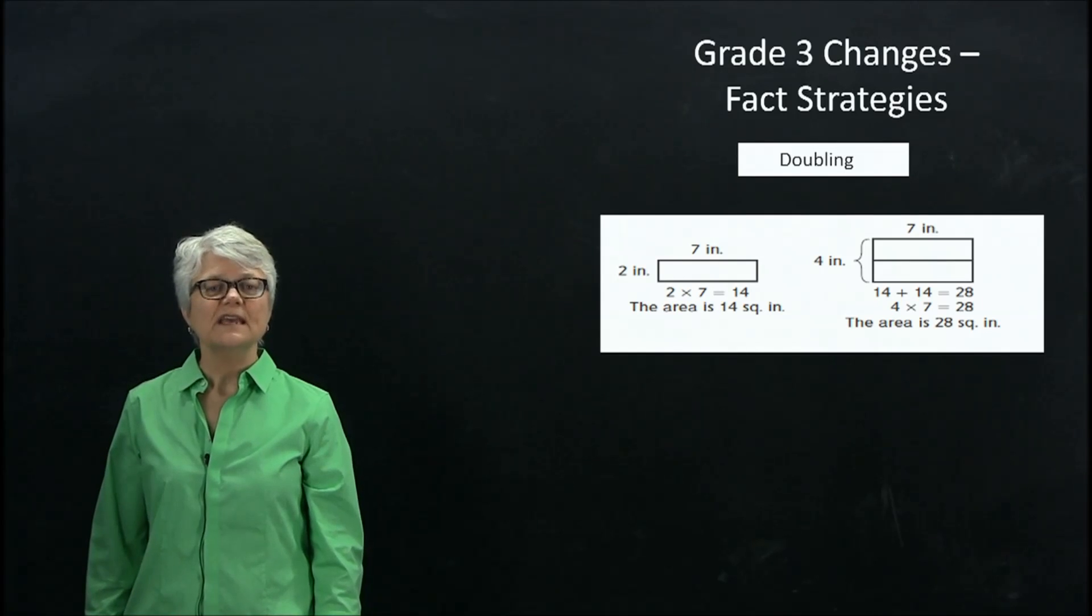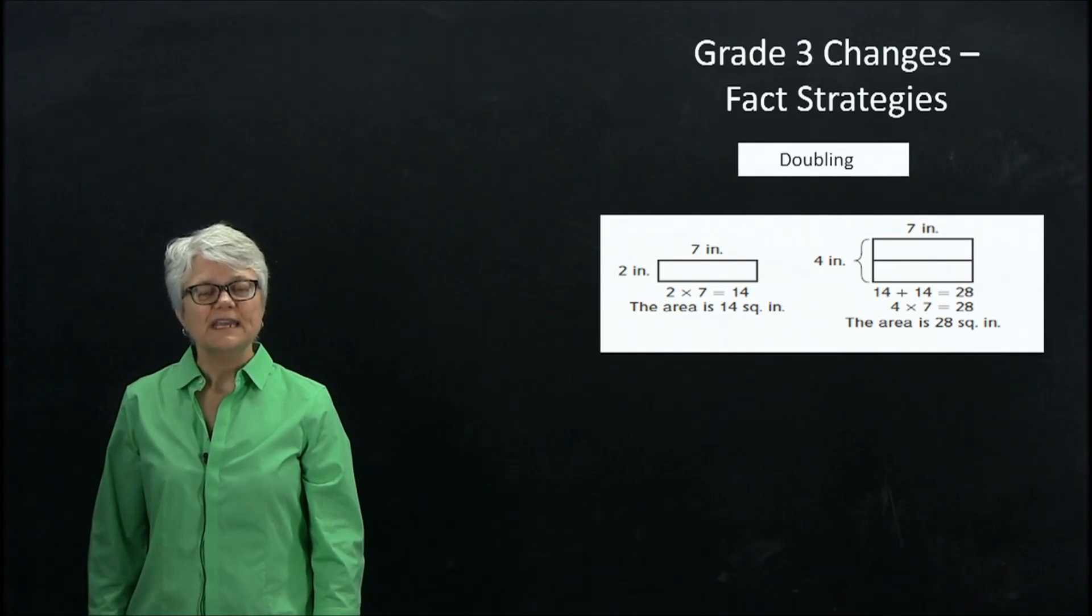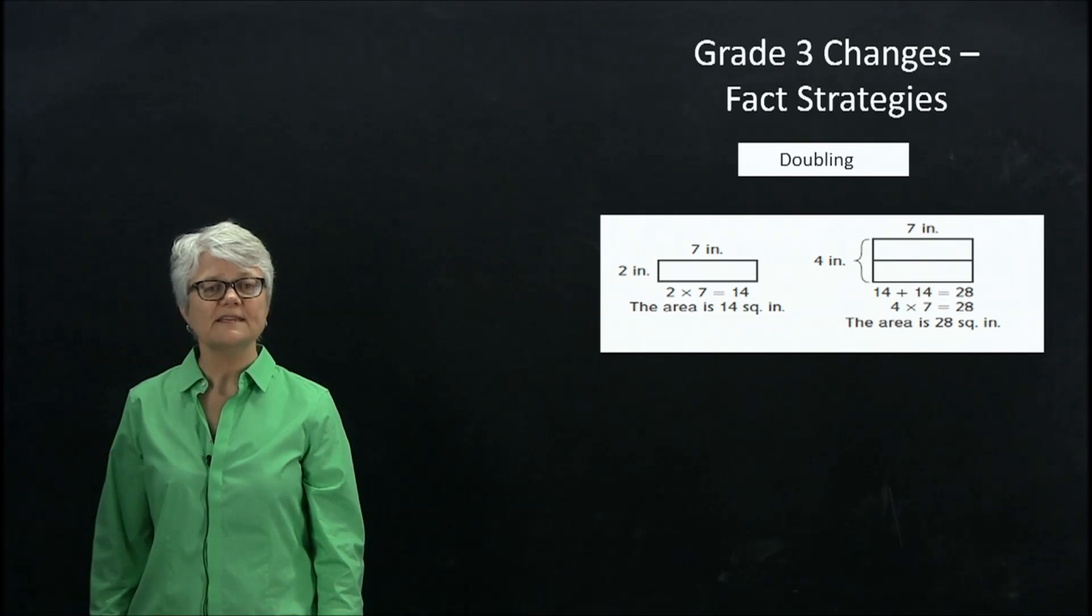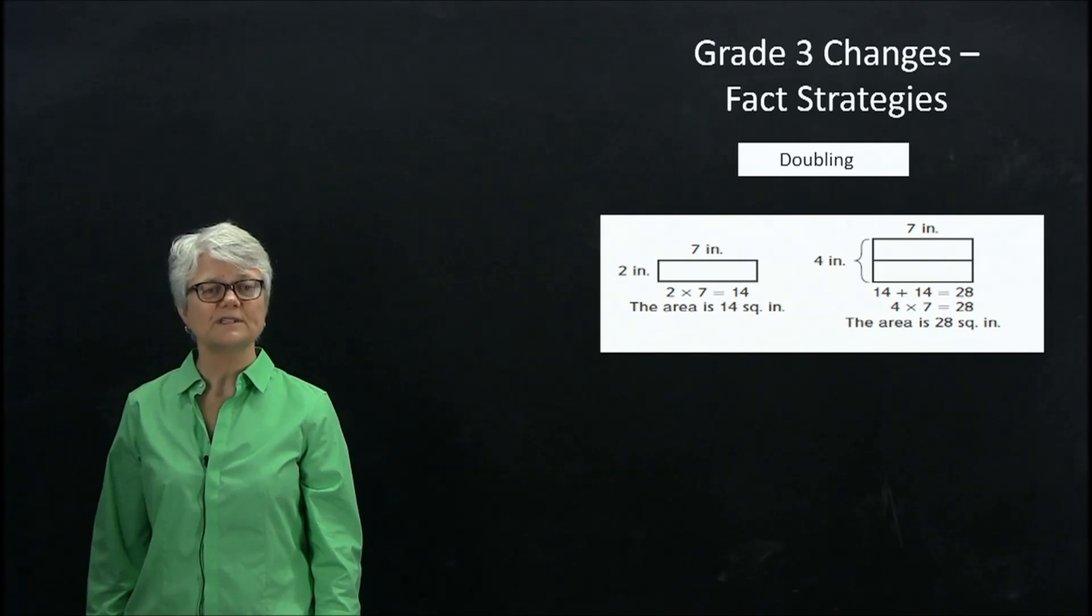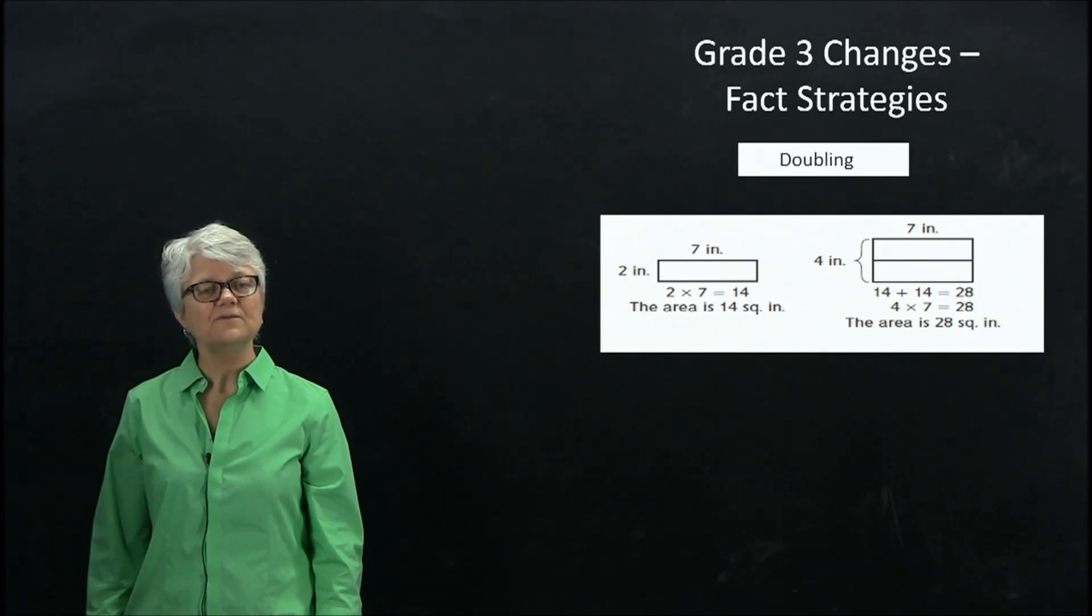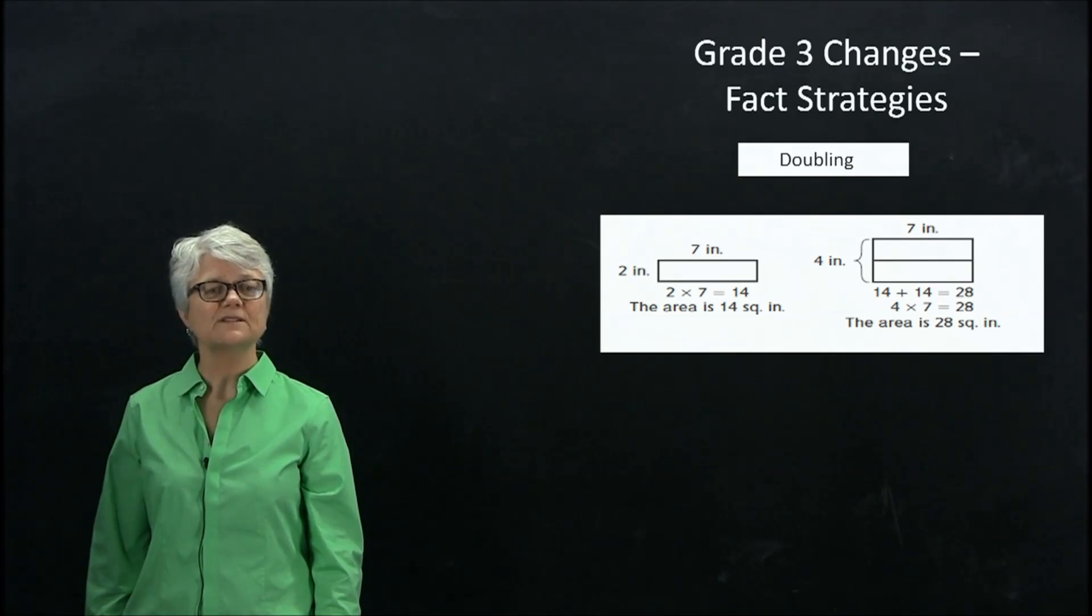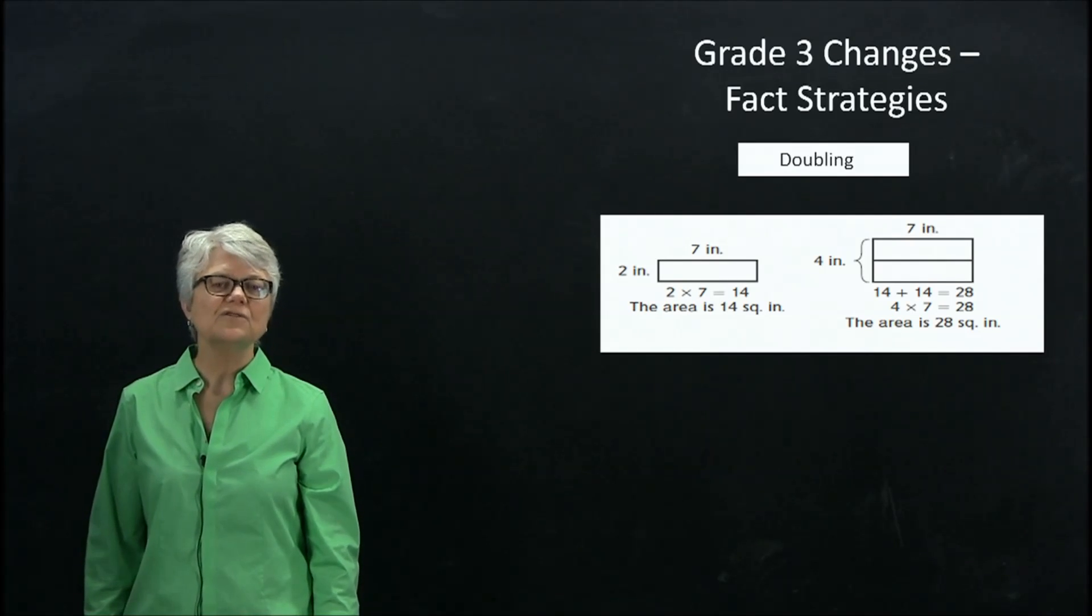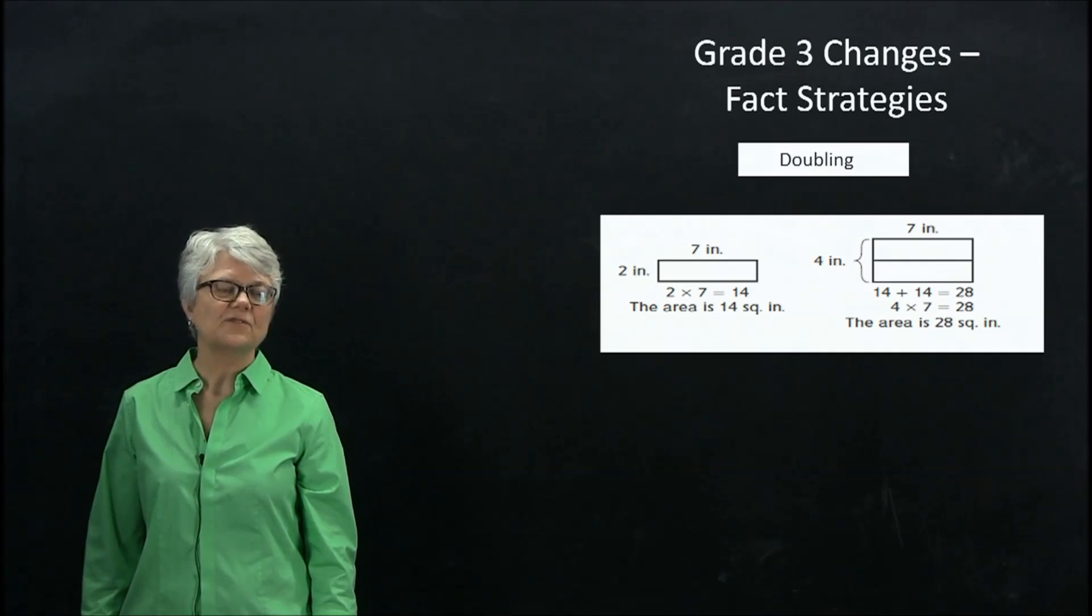Another strategy is doubling. Children again make use of known helper facts. In this case, that 2 times 7 is 14. And if you double that, you can figure out 4 times 7 is 14 plus 14, or 28. Notice the usage of the area model in this strategy.